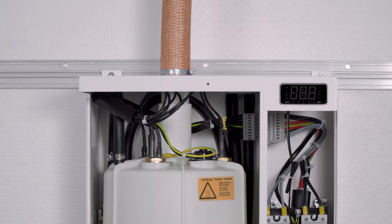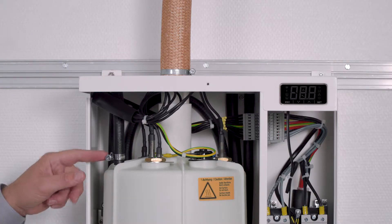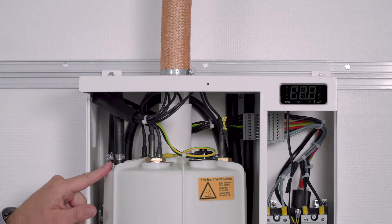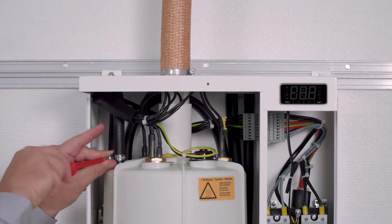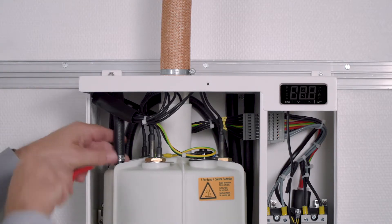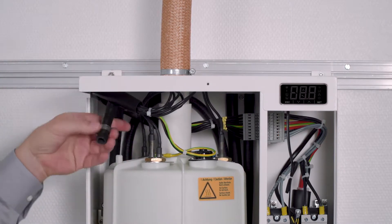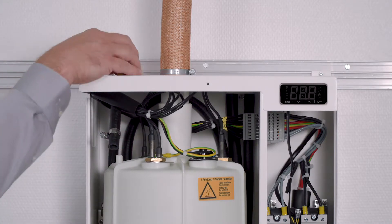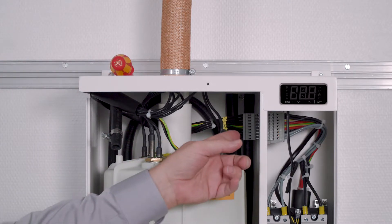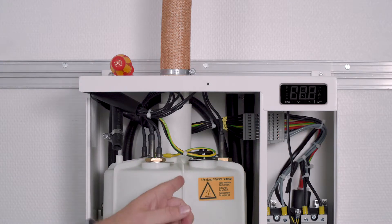Before I can remove the steam cylinder from the unit, I must detach the hose from the water level control by loosening the hose clamp here and just pull it off. Next, I unplug the steam cylinder plug here on the housing.